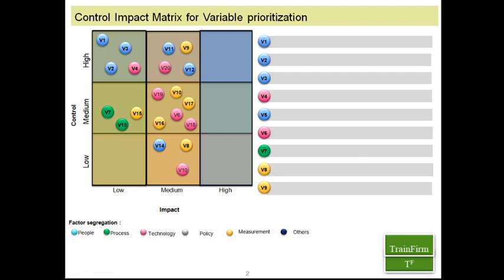This is how we lay out the Control Impact Matrix — control on the Y-axis and impact on the X-axis. You can keep it simple with just high and low, or introduce medium to make it more detailed. The way I use this tool is to prioritize or screen the list. It's no rocket science — just common sense. Any variables figuring in the high control and high impact grid are the most powerful X's, and I will pick those up first — either for hypothesis testing, statistical validation, or direct solutioning. Once I exhaust those, I move to high control and medium impact as my second choice.